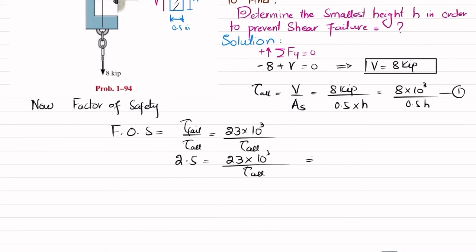So tau allowable will be equal to 23 × 10³ divided by 2.5. That is equation number two.